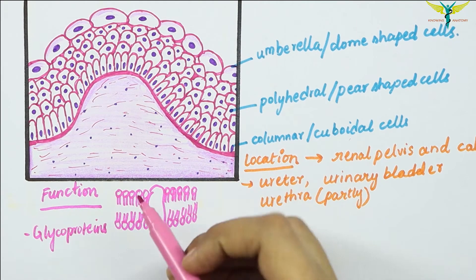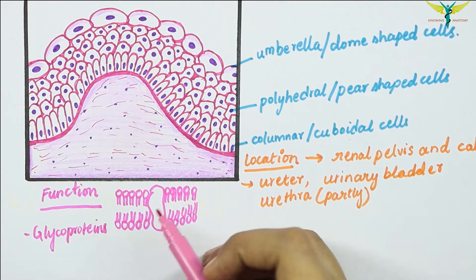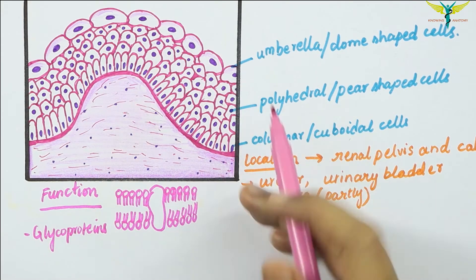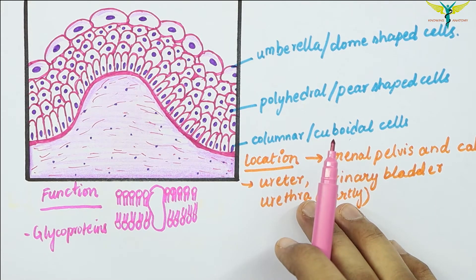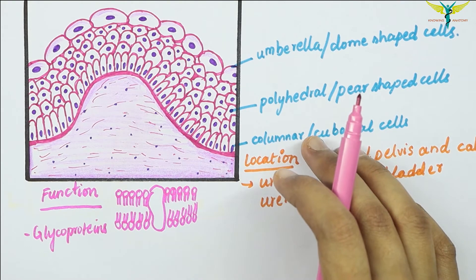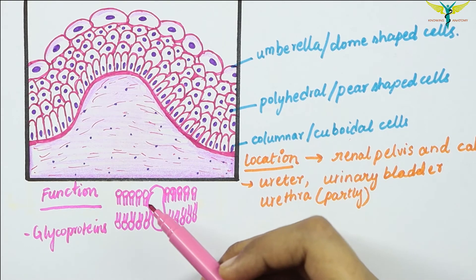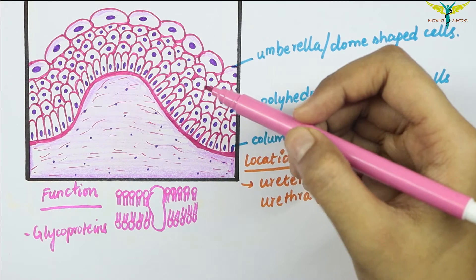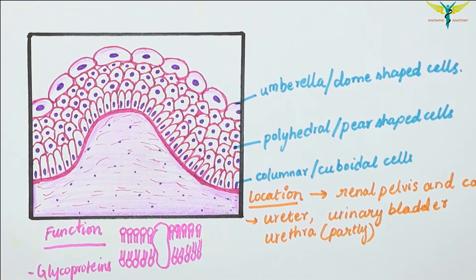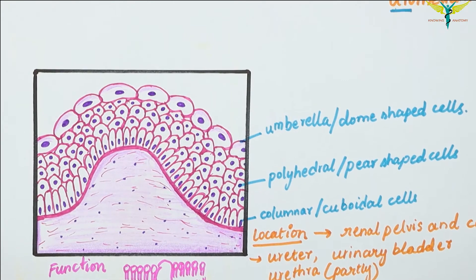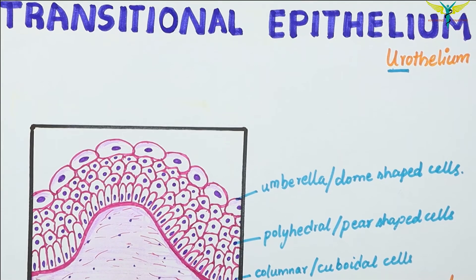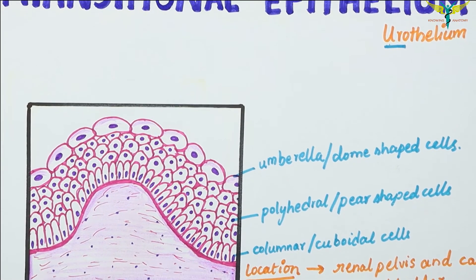The glycoproteins present in the bilipid layer of the plasma membrane of the surface epithelial cells are believed to make the membrane impermeable and resistant to the toxic effects of substances present in the urine.